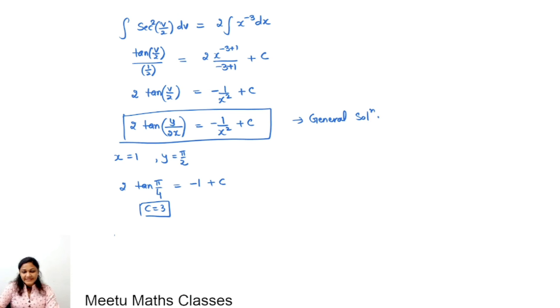Now substituting the value of c in your general solution, we will get, combining 1 and 2, it will imply that 2 tan y by 2x equals minus 1 by x square plus 3. And this will be your answer, that is the particular solution of your differential equation.